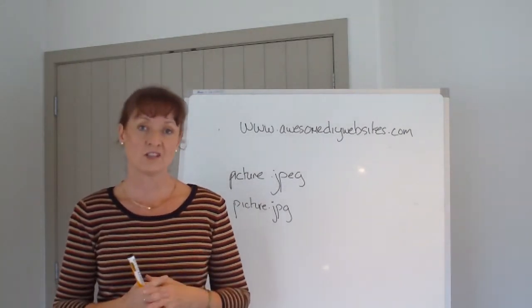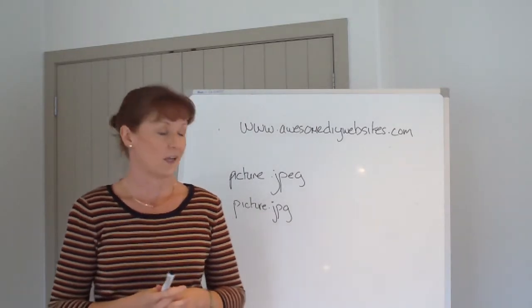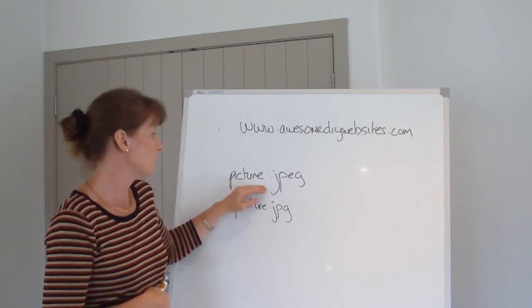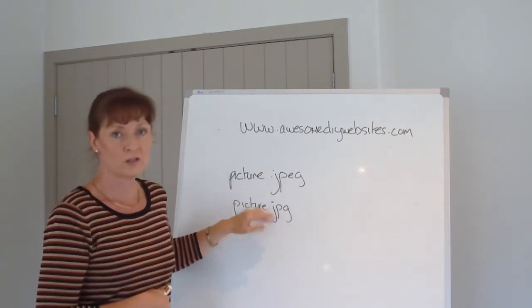A JPEG is the extension that you'll find on images that we use on the internet. It is usually followed by whatever the name of your image is, followed by .jpeg or .jpg.